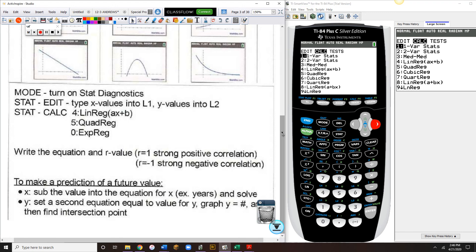To make a prediction about a future value, you're going to sub the value into the equation for x, example years, and solve for y. We're taking out all the problems where we're giving you the y value and you have to do the intersection point, so we're not going to do that part.